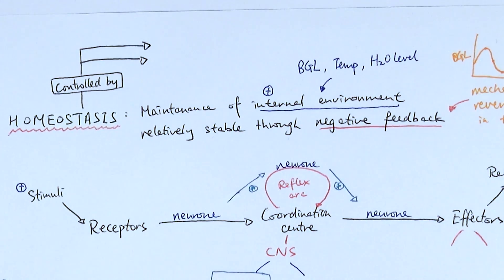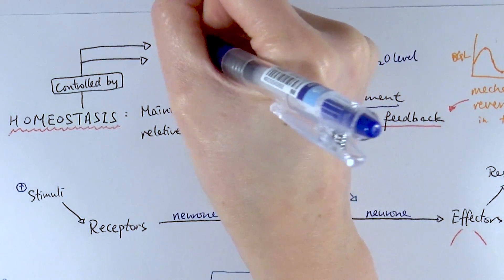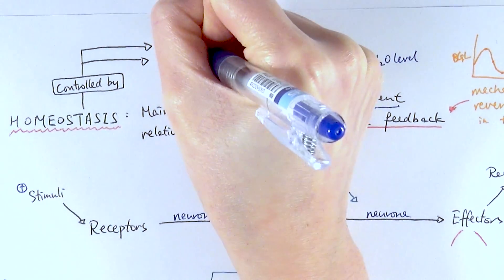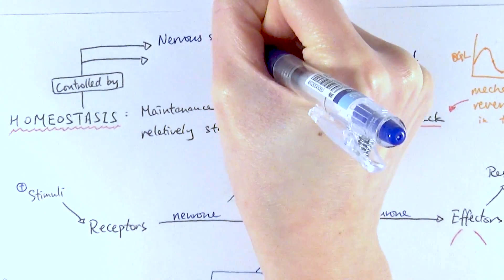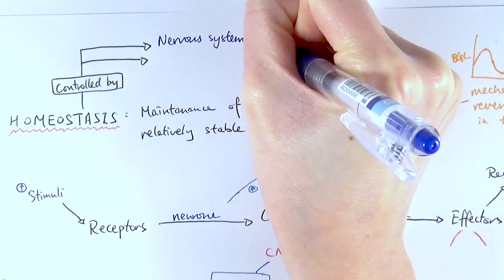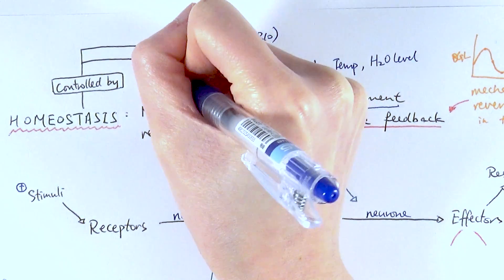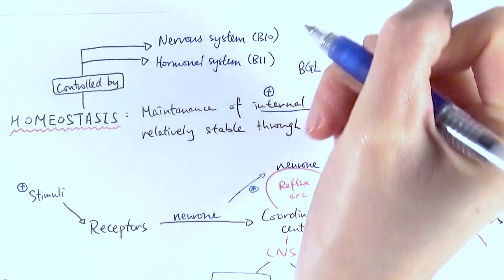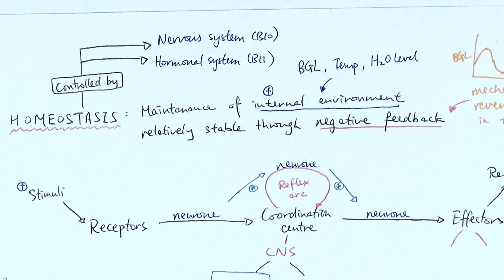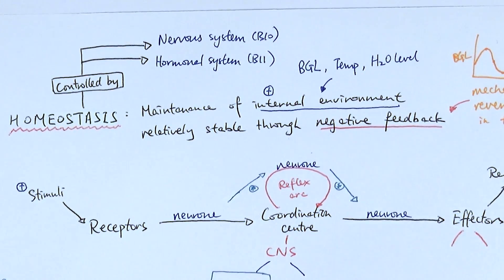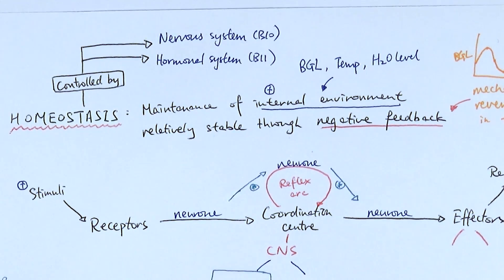Homeostasis is mainly controlled by two separate systems: the nervous system, covered in B10, and the hormonal system, covered in chapter 11. In many cases, the nervous system first detects something, sends a signal to the brain and coordination centre, which then sends a signal to the hormonal system to do its job. They work together, and there will be many links between these chapters.